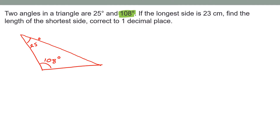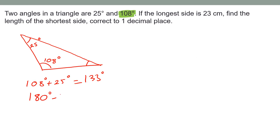We need to find the third angle. The side opposite 108 degrees is the longest side, because the longer side is always opposite the largest angle. So the missing angle is: 180 − (108 + 25) = 180 − 133 = 47 degrees.